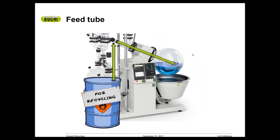Another benefit to using a rotary evaporator is the feeding tube method. You can have a tube connected to the inlet valve from your recycling bin. This allows you to introduce sample into the system without stopping the process — no need to stop the heating, rotation, or vacuum. Once the solvent gets low, you open up the inlet valve, the vacuum naturally sucks the solution into the system and fills the evaporation flask. When it reaches an adequate level, you close the inlet valve and the process starts all over again.